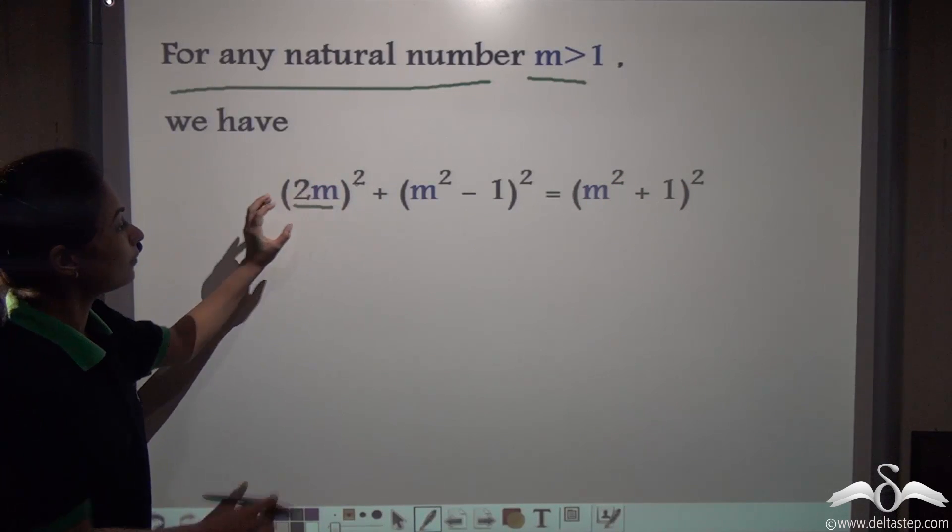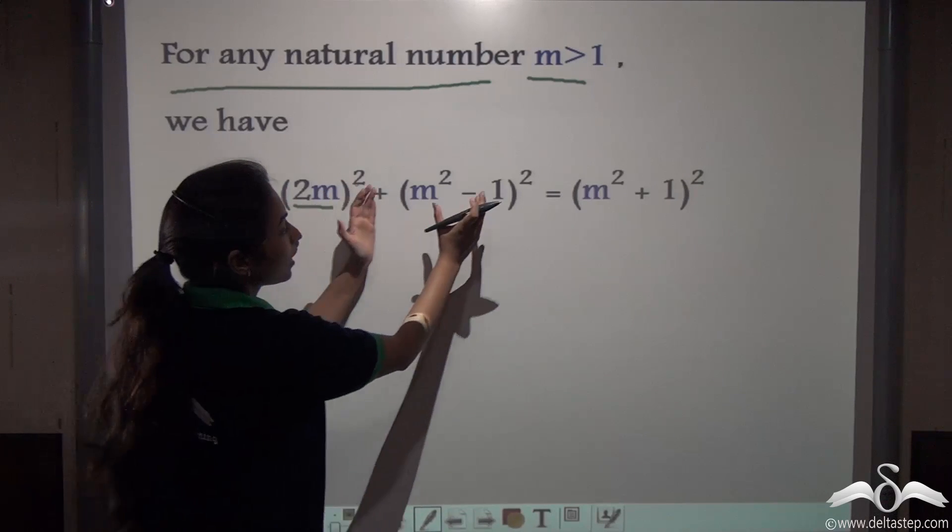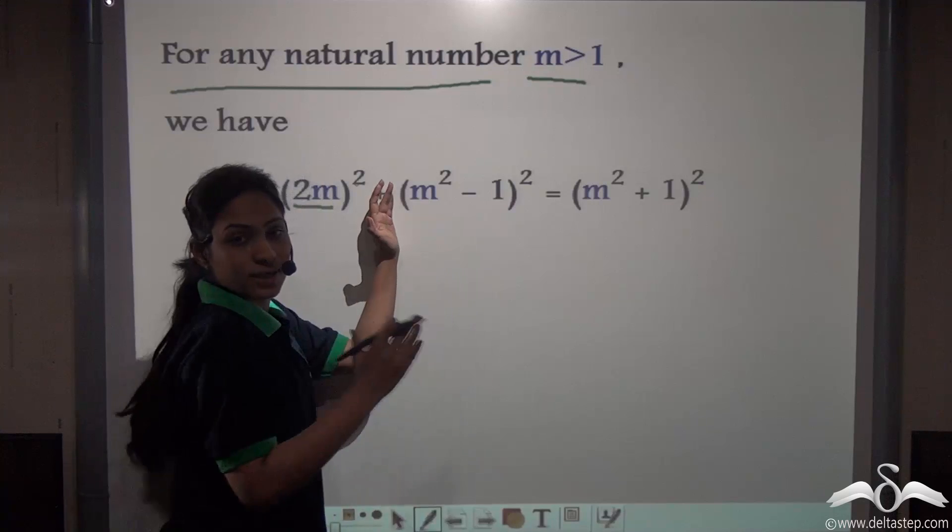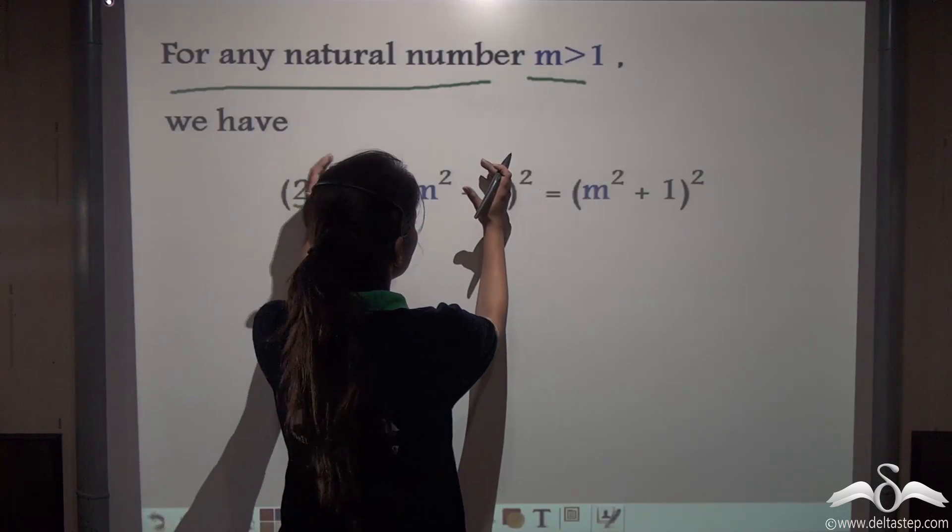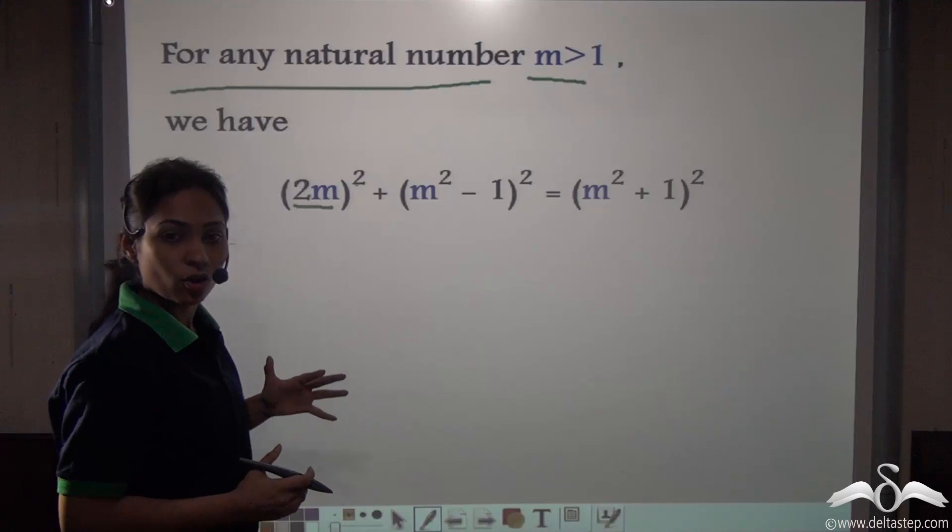then 2m whole squared, this represents one square. This one, m squared minus 1 whole squared, this represents another square. Now these both added gives us again a square. So this is what we do in Pythagorean triplet.